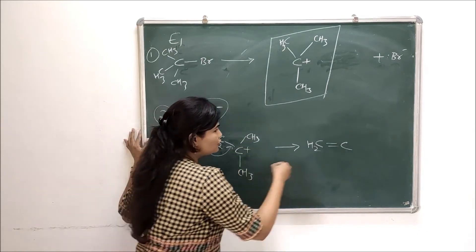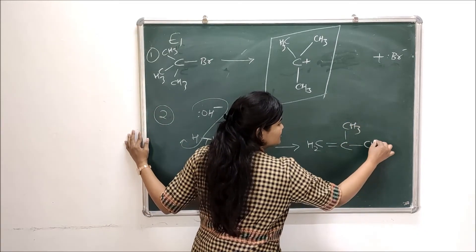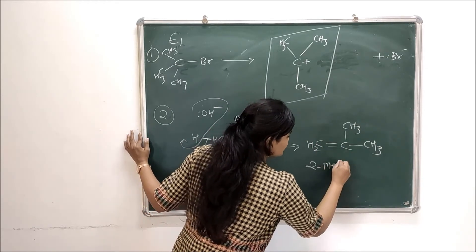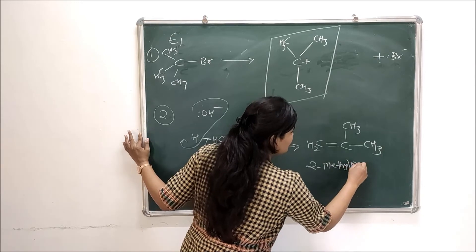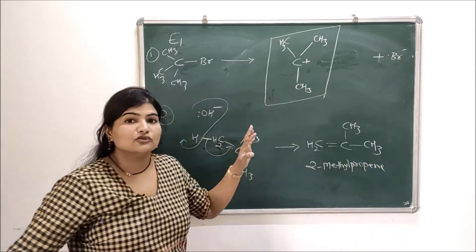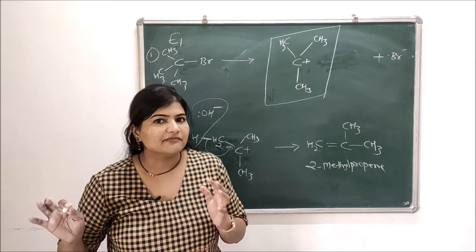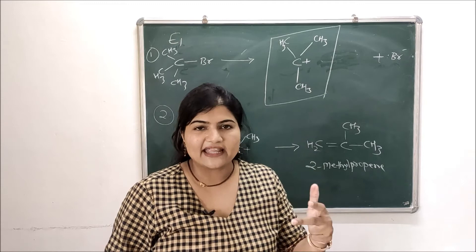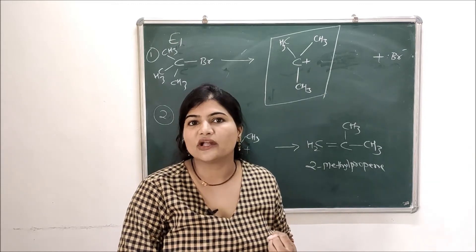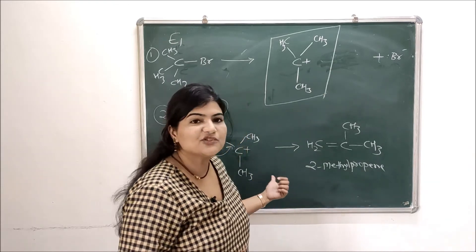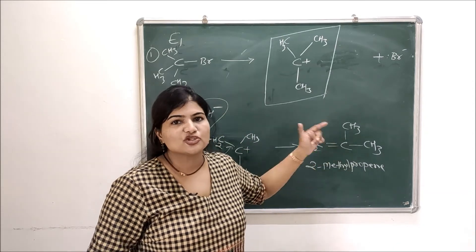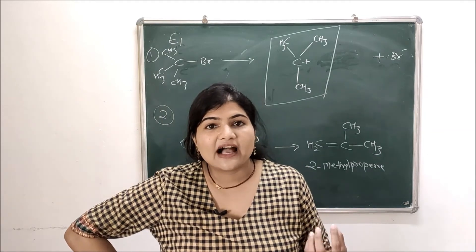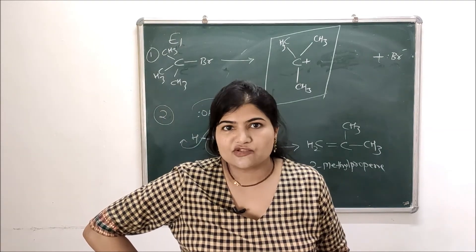The product is 2-methylpropene. This is what E1 mechanism is all about — a two-step mechanism where in the first step you form a carbocation and in the second step you abstract the proton from the beta carbon, leading to formation of an alkene.